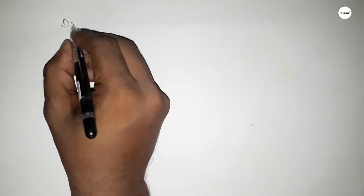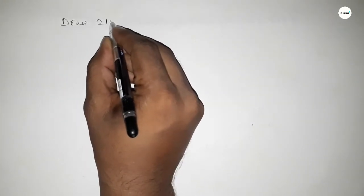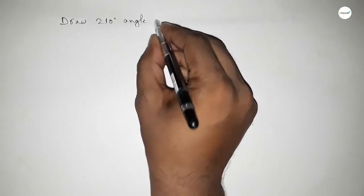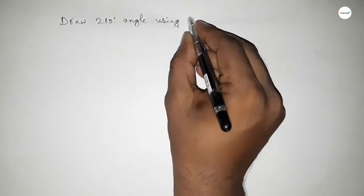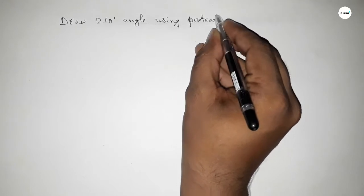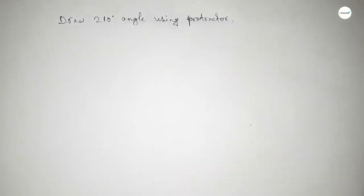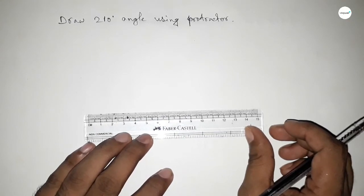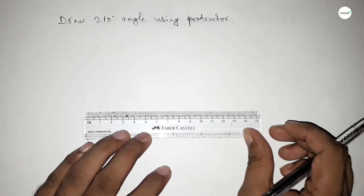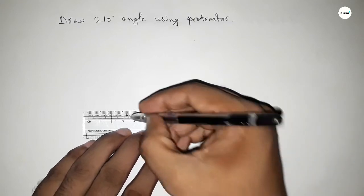Hi everyone, welcome to SI Share Classes. Today in this video we have to draw a 210 degree angle by using a protractor. So let's start the video. First of all, we have to draw a line of any length.